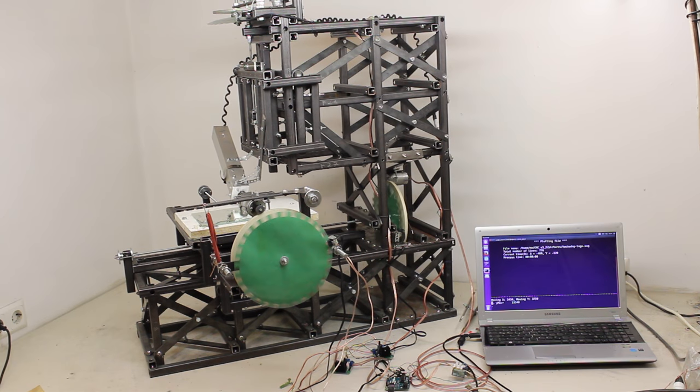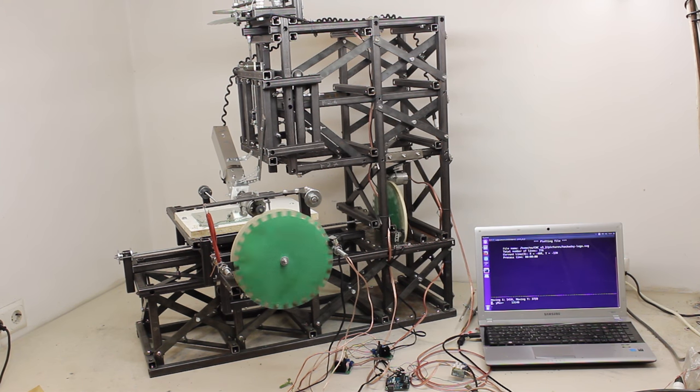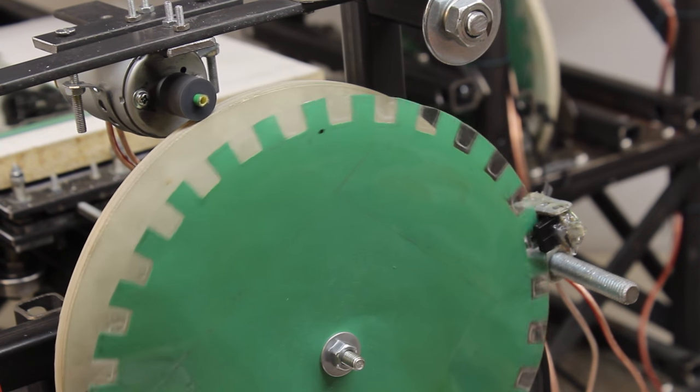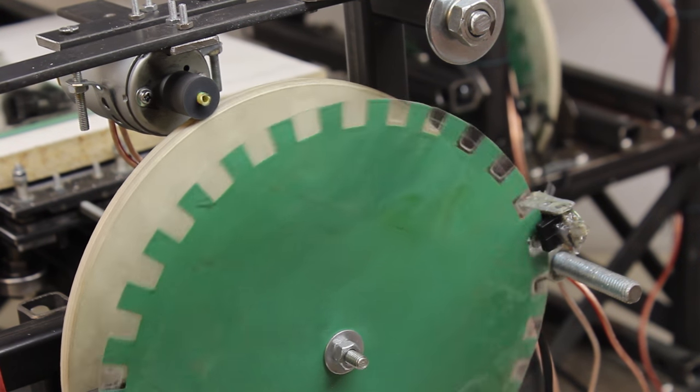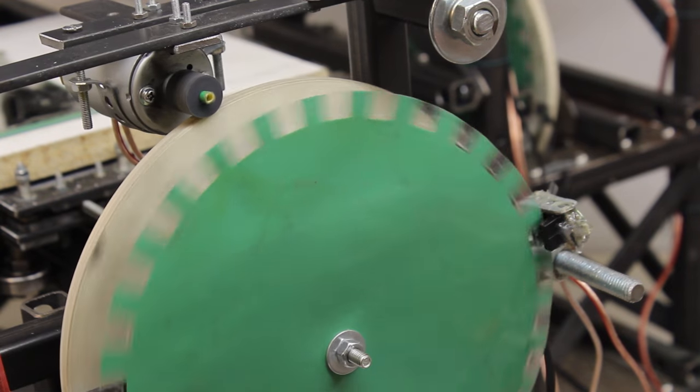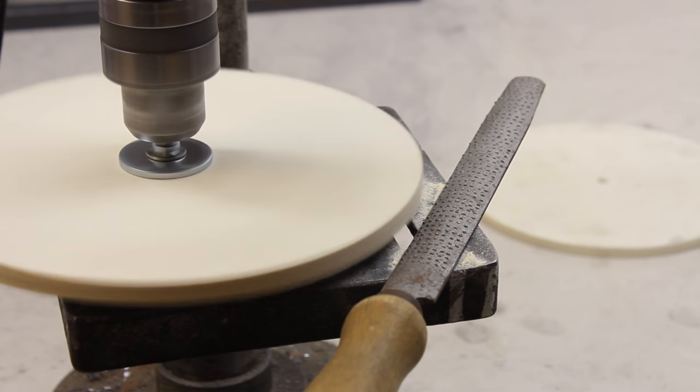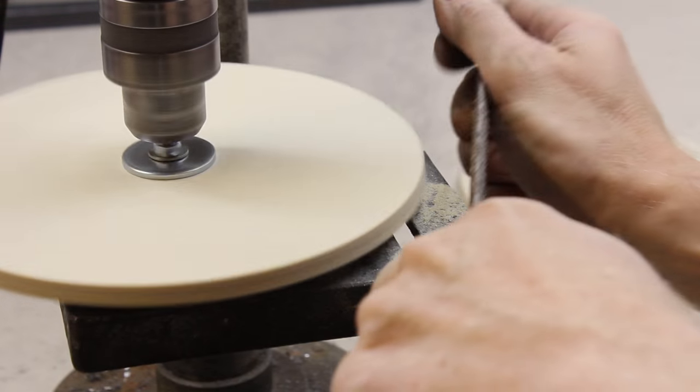DC motors from old printers are the simplest drive configuration for this machine. Because of the low torque of those motors, a gear is needed as demonstrated in a previous video. It is made from a disc with 20cm in diameter and cut from 5mm plywood.